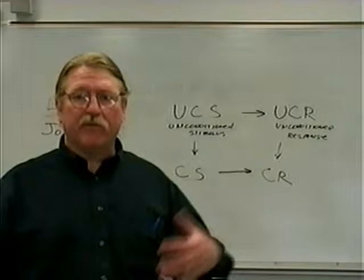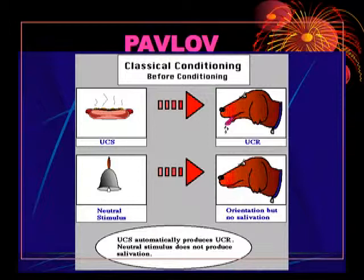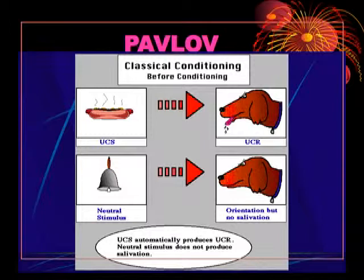If you look at Pavlov's dogs — you've seen this in the book — several things happen. When you give a dog meat or dog powder, what always happens when you put it in his mouth? If he's normal neurologically, he always salivates. That's built in. It's the normal response to meat powder because it's the beginning of breaking that powder down into usable energy for the dog's body. So we have an unconditioned stimulus, which is the dog powder, which triggers the unconditioned response, which is salivation.